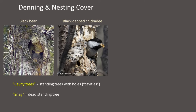We use the term cavity trees to refer to standing live or dead trees that have holes or cavities. We use the term snag to refer to dead trees that are still standing, and snags often have cavities. Cavities can occur within the trunk of a tree or in the live or dead branches. Importantly, the size of the tree or branch determines what wildlife species can use it as a den or nest site.